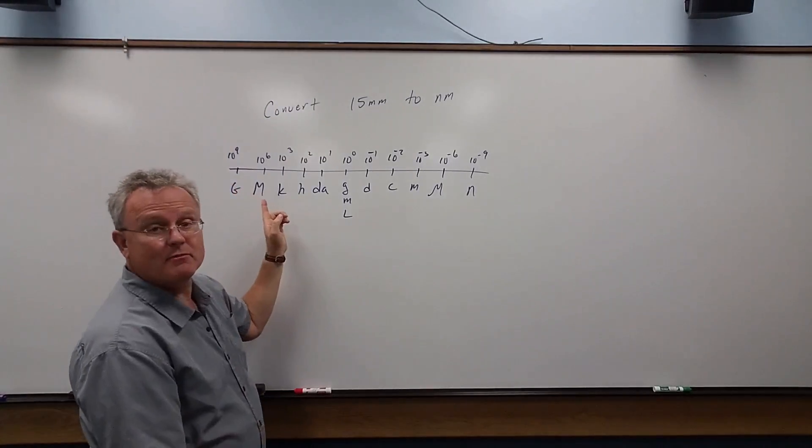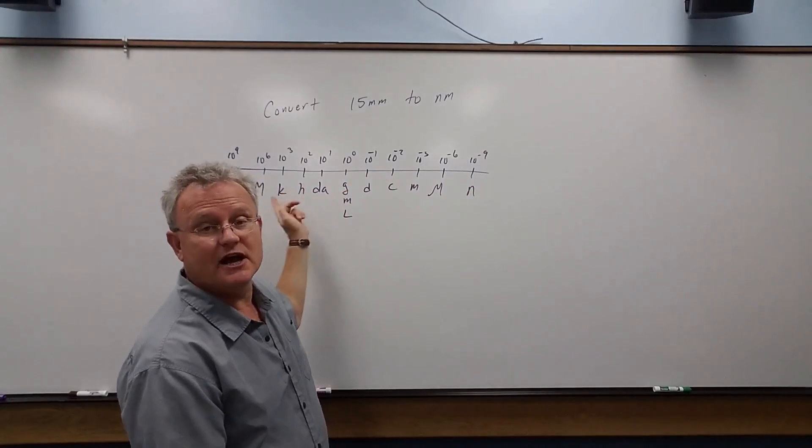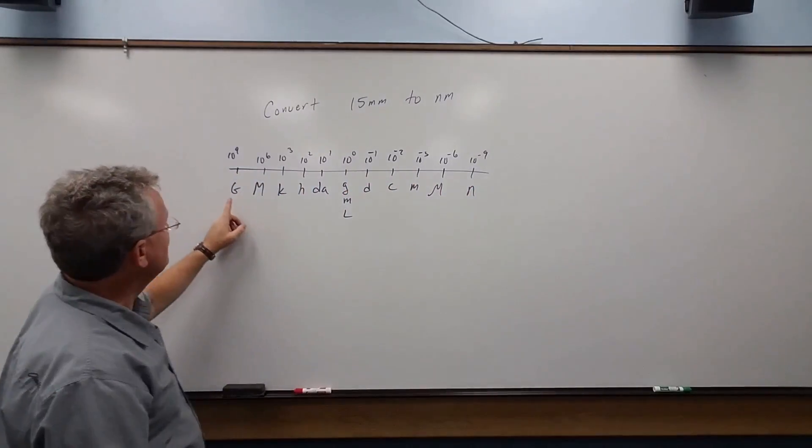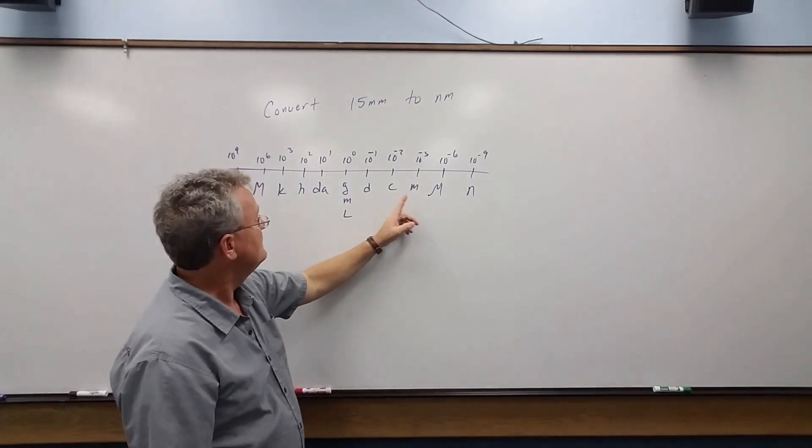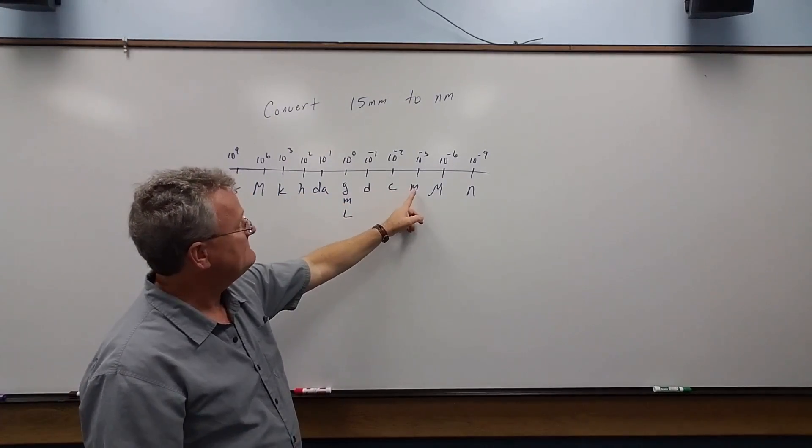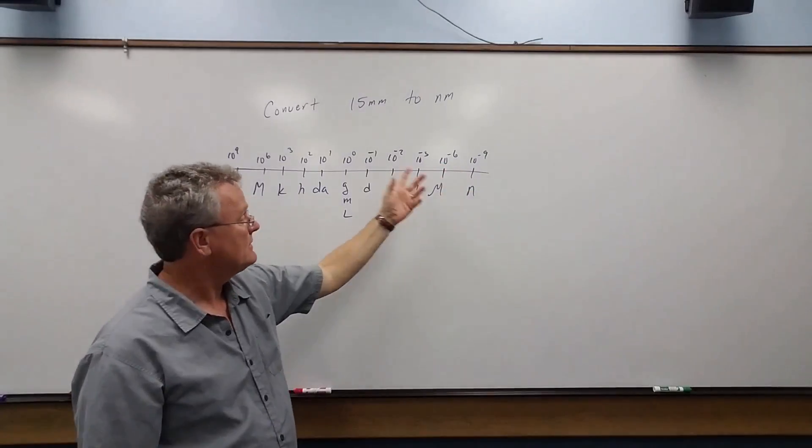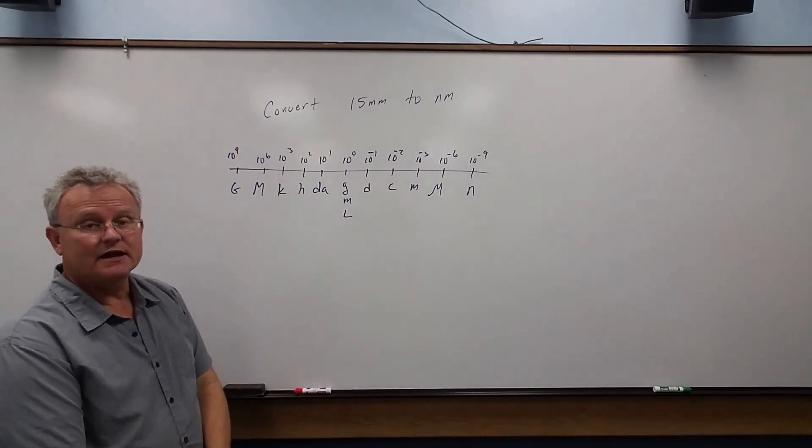In this example, we're going to convert 15 millimeters to nanometers, and we're going to use what I'm calling the horizontal format. So we have giga, mega, kilo, hecto, and so on, deci, centi, milli, micro, nano, and their corresponding exponents.